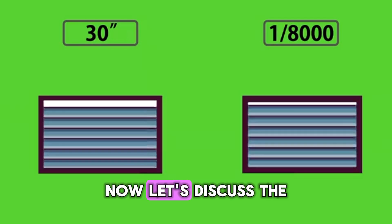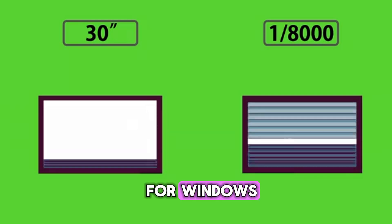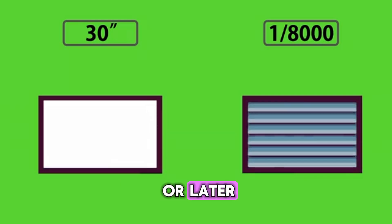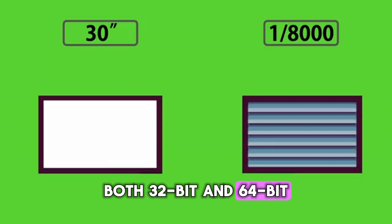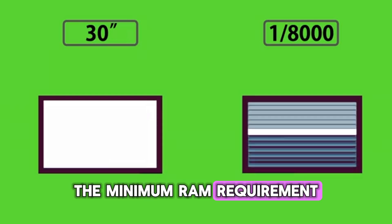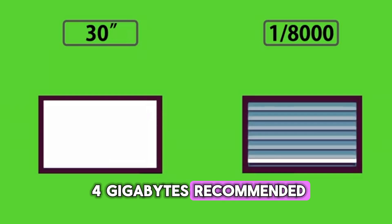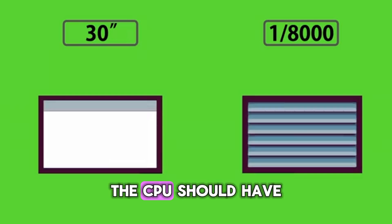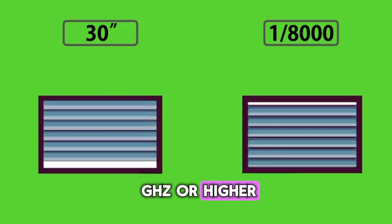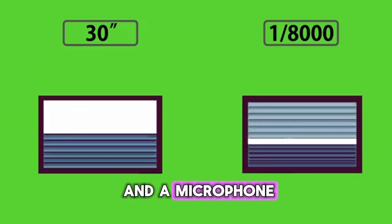Now, let's discuss the system requirements for Zoom. For Windows, it requires Windows 7 or later. Both 32-bit and 64-bit versions are supported. The minimum RAM requirement is 2GB with 4GB recommended. The CPU should have a dual-core 2GHz or higher. Additionally, you need a webcam and a microphone.